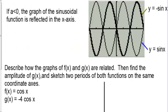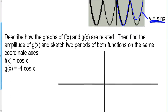If a is less than zero, the graph of the sinusoidal function is reflected in the x-axis. So if we have y equals sine of x, sine starts at zero and goes up. But y equals negative sine of x starts at zero and goes down — that would be a reflection over the x-axis.